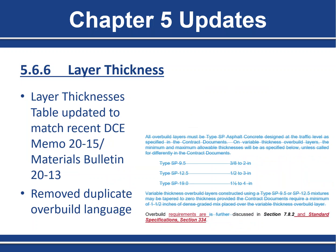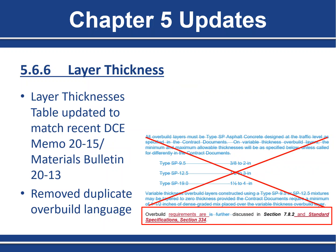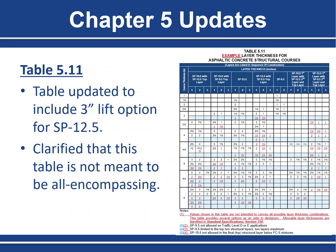Also in Section 5.6.6, we removed some redundant language for overbuild. Chapter 7, which has a lengthy discussion on overbuild, was referenced instead, and the text was deleted from Chapter 5. The final updates to Chapter 5 are in Table 5.11, which incorporates the change to the maximum lift thickness of 3 inches for SP 12.5, adding examples of layer combinations for a 3-inch lift. We also clarified that the values shown are not your only layering options — the table is meant to aid your design.